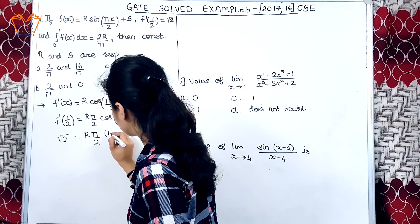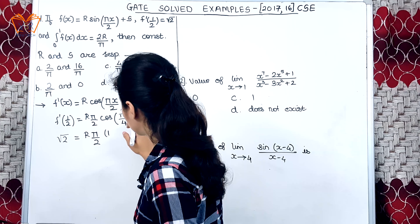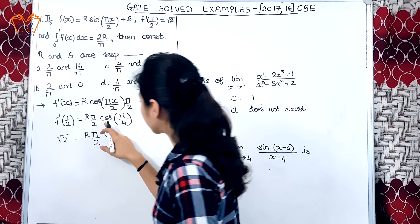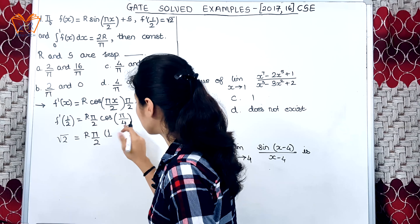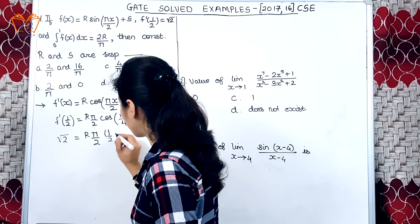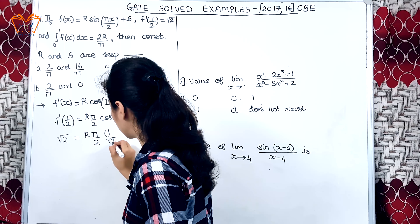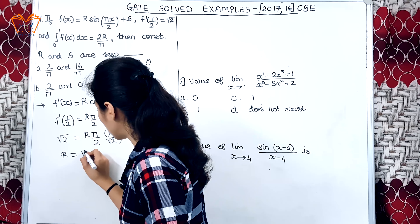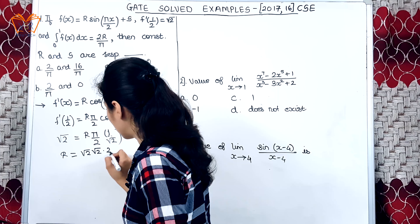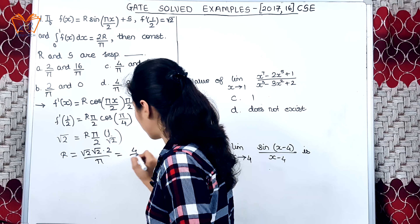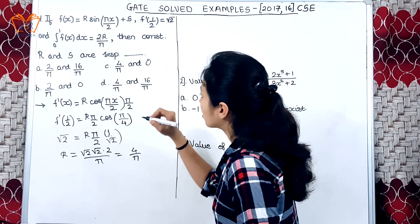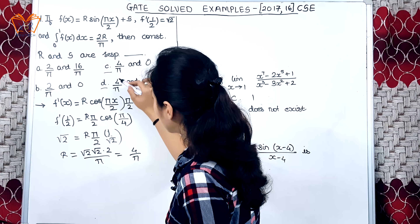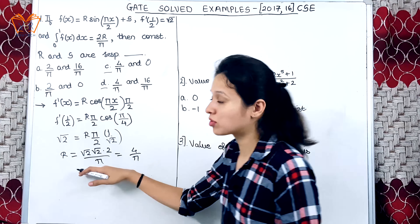f'(1/2) is defined as √2. So we substitute: r·(π/2)·cos(π/4). cos(π/4) is 1/√2. So r = √2 × √2 × 2 / π, which gives r = 4/π.